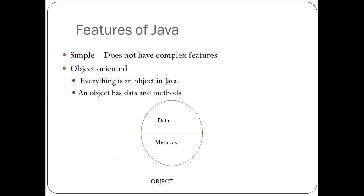What are the features of Java? Java is simple — it does not have complex features. Some complex features present in C and C++ are not there in Java. Java is also an object-oriented programming language because everything is an object in Java. An object has data and methods, as we saw in the previous slides.